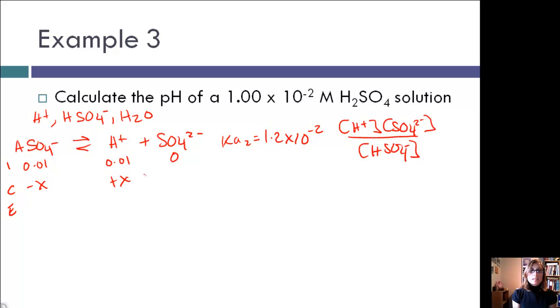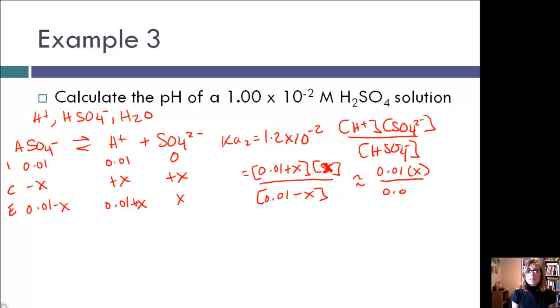0 SO4-2, minus x, plus x, plus x. 0.01 minus x, 0.01 plus x, x. Substitute those values in, we get 0.01 plus x for our H+. SO4-2 is x. HSO4- is 0.01 minus x. If we make our assumptions, this is 0.01 times x over 0.01. That gives us an x value of 1.2 times 10 to the negative 2, which is also the same thing as 0.012.